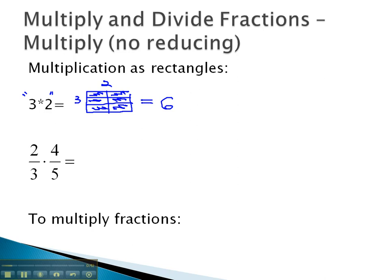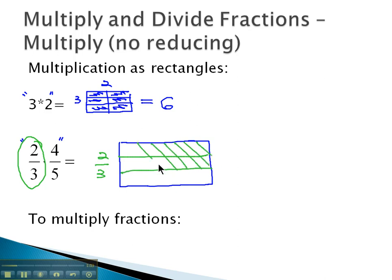So if I wanted to do 2 thirds times 4 fifths, I could think about that as a rectangle where the height is 2 thirds of a whole, so let's divide this into 3 parts. We're dividing the whole into 3 parts. We want to shade 2 of them to represent 2 thirds of the rectangle.